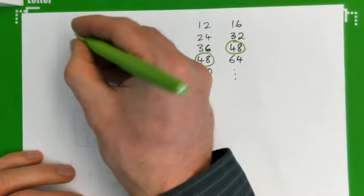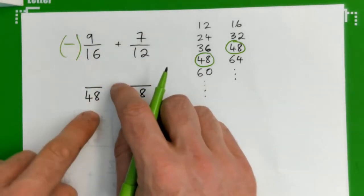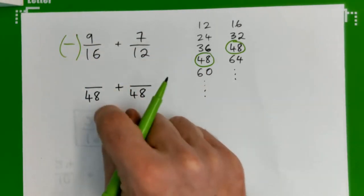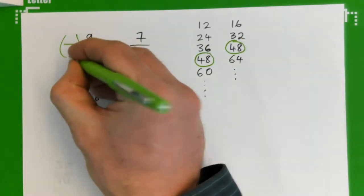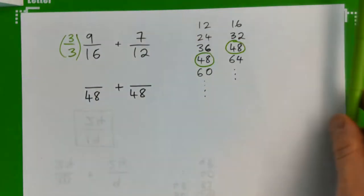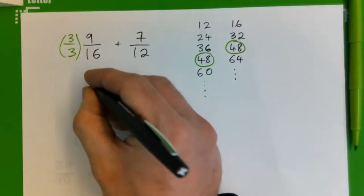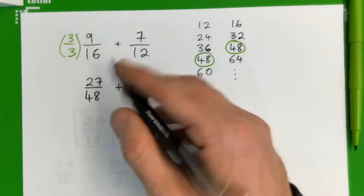What do I multiply 16 by to get 48? So 16 times what gives 48? 1, 2, 3. 3 times 16 gives 48. So I can multiply 9/16 by 3/3. 3 times 9 is 27. So the 9/16 becomes 27/48.